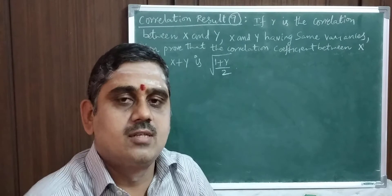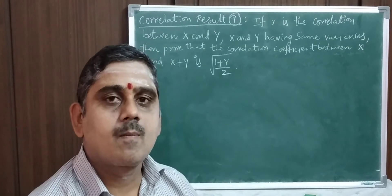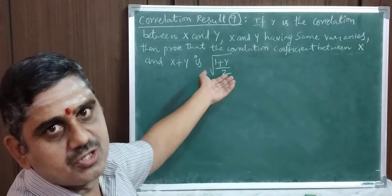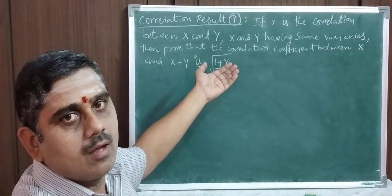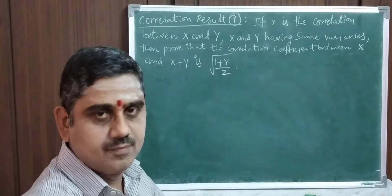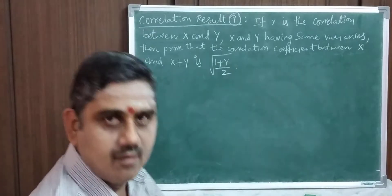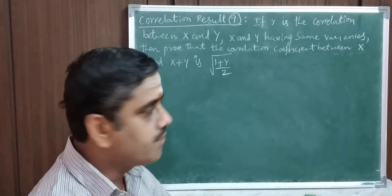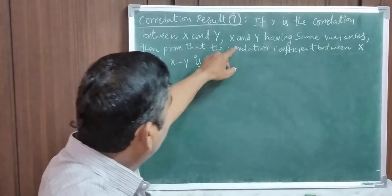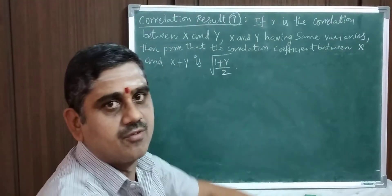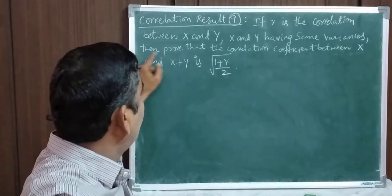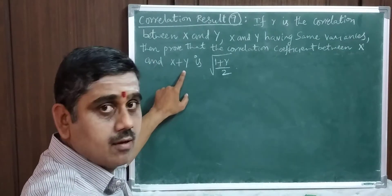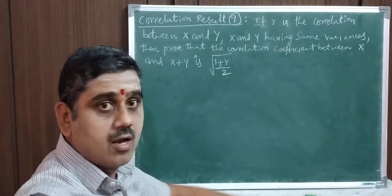Welcome to BSC statistics students. We discuss another result of correlation. If r is the correlation coefficient between x and y, and x and y have the same variances, then prove that the correlation coefficient between x and x plus y is the square root of 1 plus r divided by 2.